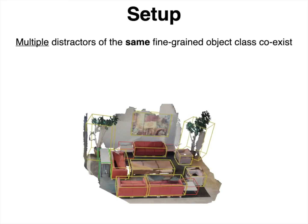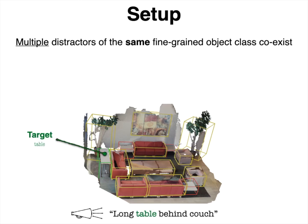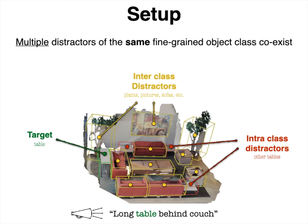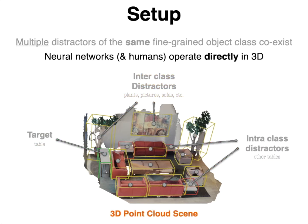For the aforementioned problem, we make two important design choices. First, as shown in this image, the referred target here at table must coexist in the scene with multiple distracting instances of the same class in addition to different class distractors. Second, we ground our problem directly in 3D space and specifically, we use 3D point clouds to represent the scenes and their objects.